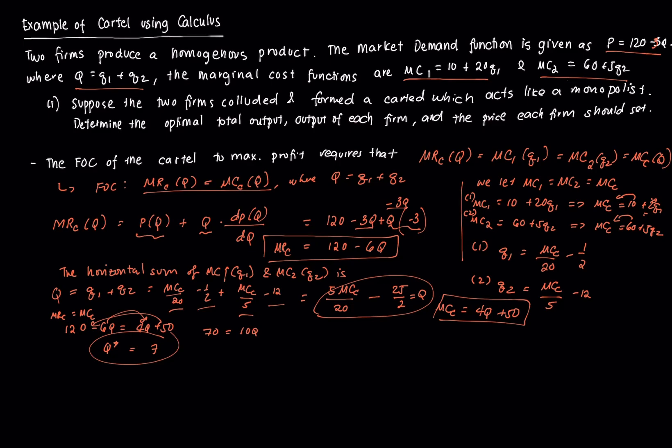But we need to determine what is the optimal output of each firm. And, to do that, we just need to compute for a value for MCC and plug it into equations 1 and 2. If you recall, if we plug in 7 here, MCC star, this is 4 times 7 plus 50, which would be equal to 78. Then, we're going to plug in the 78 to each one here. This is 78 over 20 minus 1 half. This is equal to 3.4. This is the output of firm 1.